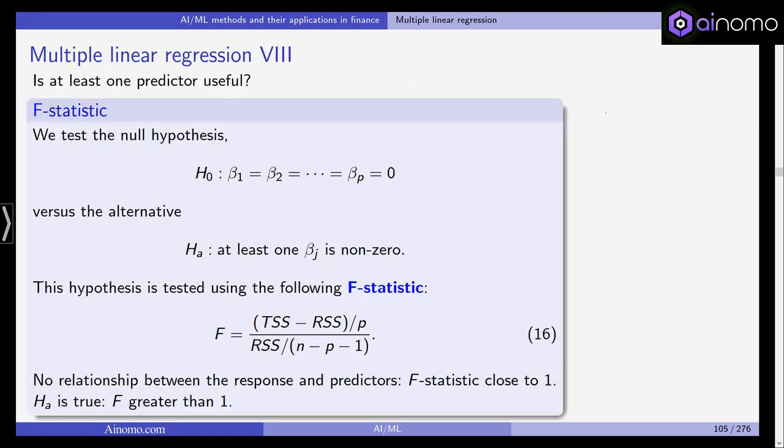Let's talk about this first question: is at least one predictor useful? We are using the F statistic. We are testing the null hypothesis that all those slopes are zero, not even one is not equal to zero. The null hypothesis is beta 1 equals beta 2 and so on equals beta p equals zero. We're testing this hypothesis using the F statistics. We are going back to the total sum of squares and residual sum of squares.